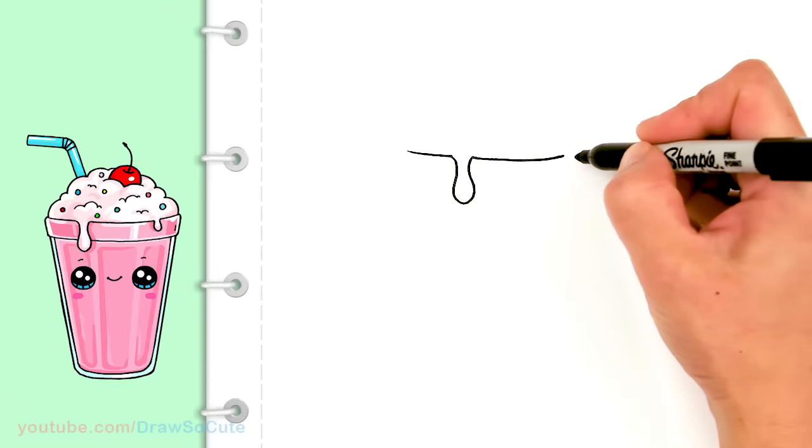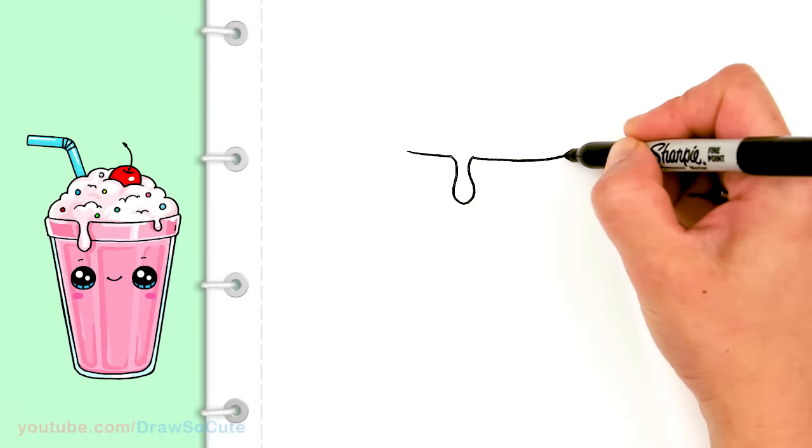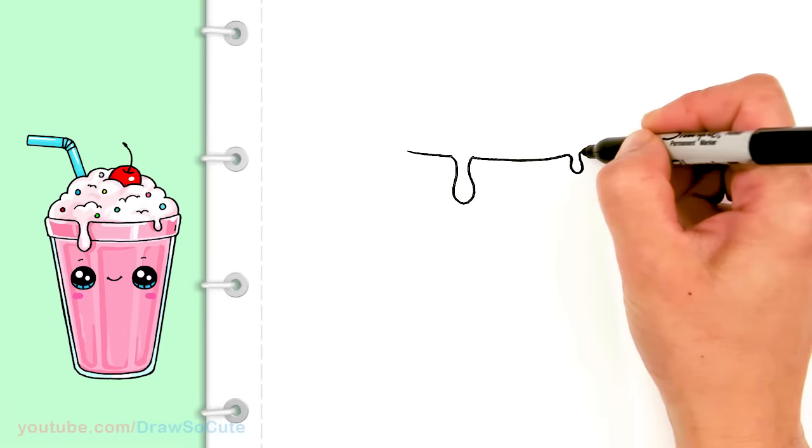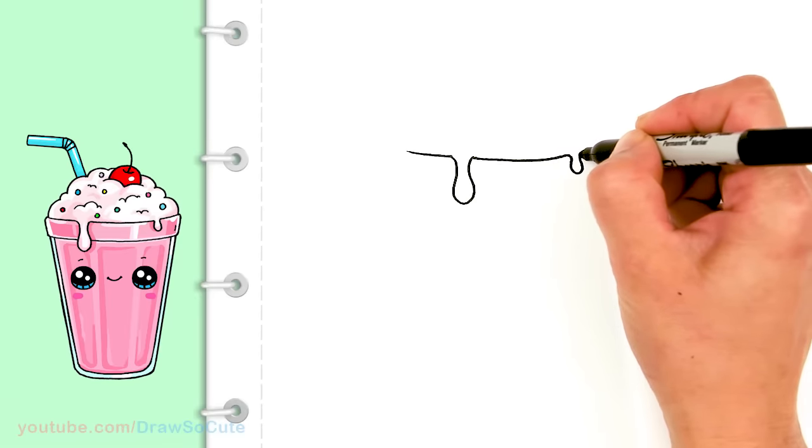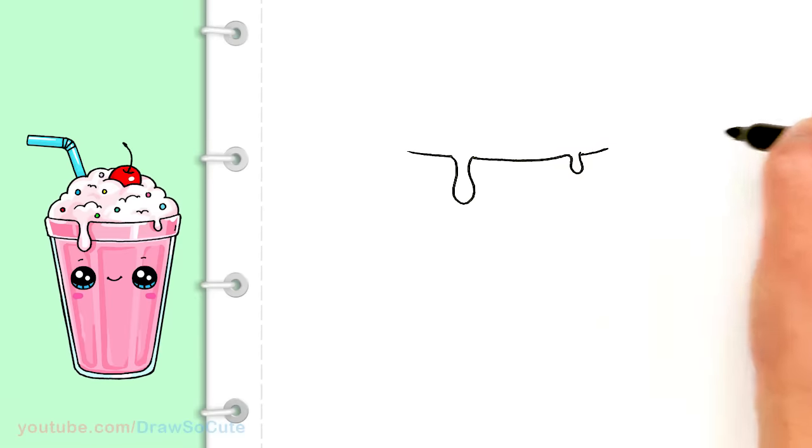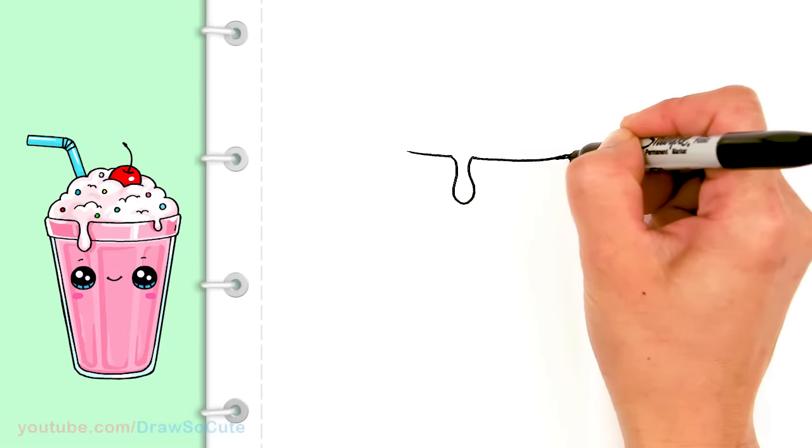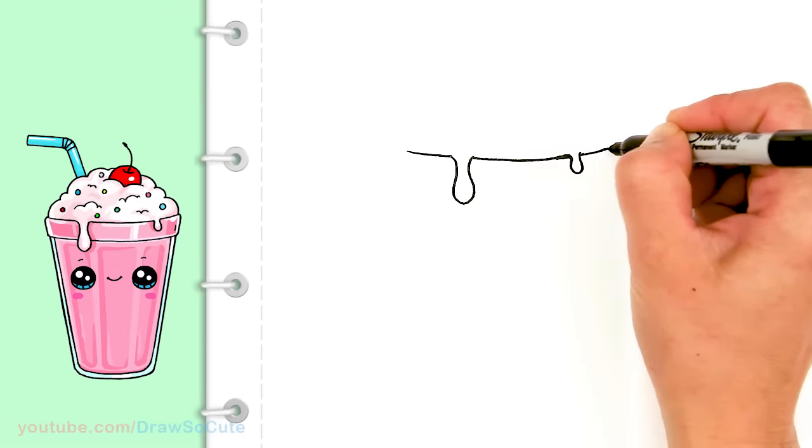And say about right there I'm going to stop again because there's another small drip. And now I can go ahead and finish off my glass right here. So about right there okay. Fix my curve a little bit.